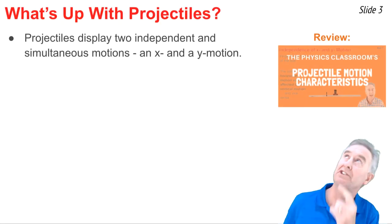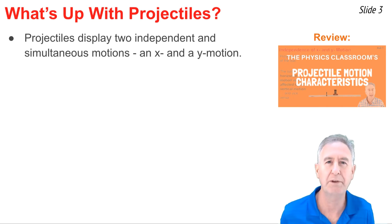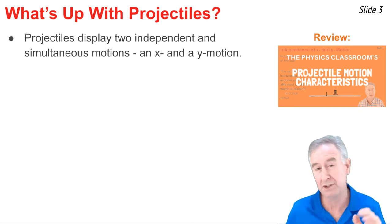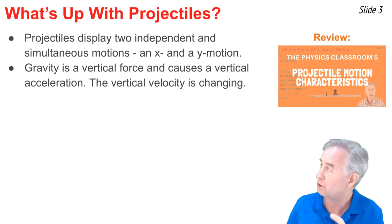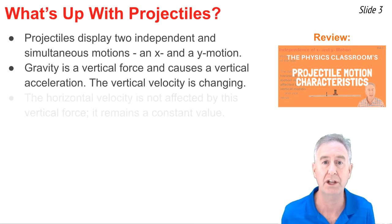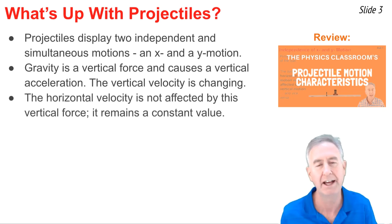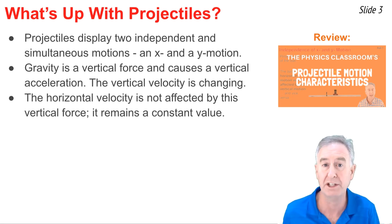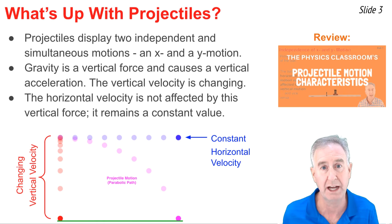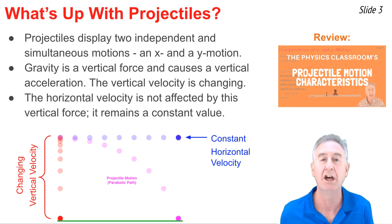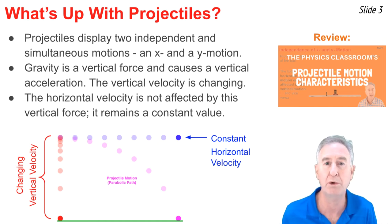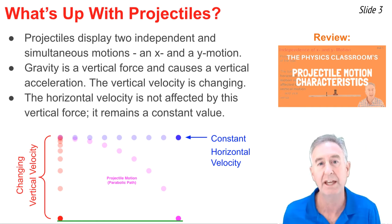In the previous video of this tutorial series, we learned about the motion characteristics of a projectile. Here's a quick review. Projectiles display two independent and simultaneous motions: the horizontal and the vertical motion. Gravity is the only force on a projectile, and as a vertical force, it changes the vertical velocity — it causes a vertical acceleration. But that vertical force has no effect upon the horizontal motion, so a projectile displays a constant horizontal velocity. This graphic summarizes these concepts. In red, you see the vertical acceleration, the changing velocity due to free-fall acceleration. In blue, you see the constant horizontal velocity. A projectile is a simultaneous mix of these two independent motions, displayed by the magenta dots, resulting in this parabolic path characteristic of a projectile.